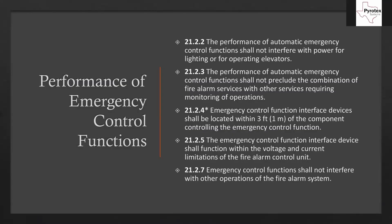A few performance points: the performance of automatic emergency control functions shall not interfere with the power for lighting or for operating elevators. The annex explains that under normal conditions — when there's not a fire or emergency — we don't want to interfere with normal elevator operation. There's a majority of this chapter that deals with elevator operation; we've done a previous video on it. Also, the performance of automatic emergency control functions shall not preclude the combination of fire alarm services with other services requiring monitoring operation — meaning the emergency control functions can't stop the fire alarm from doing what it needs to do.